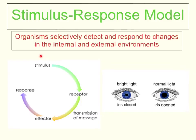First, we have a change in the internal or external environment. That change is called the Stimulus. In the example we looked at, the stimulus is the amount of light — the light intensity. So when the light intensity goes from normal and becomes bright, that is a stimulus.